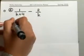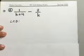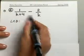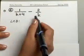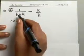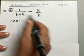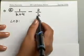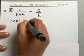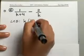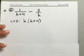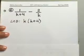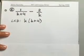Now you first start out by finding your least common denominator. Now you have K plus 4 and K. In this case, you will see that you don't really have any factors that are common between these two denominators. So your least common denominator will be just K times K plus 4. You just multiply the two denominators together and you will end up with your least common denominator.